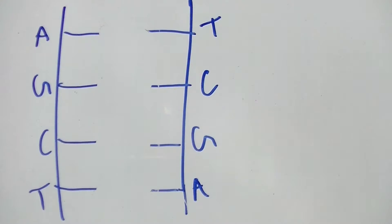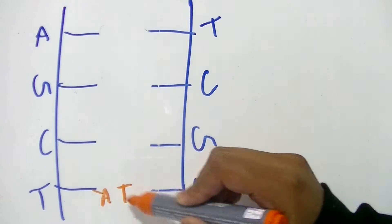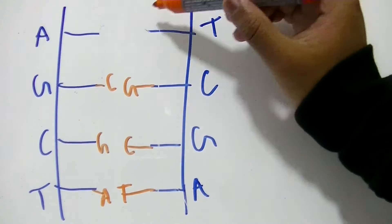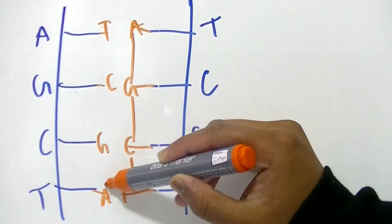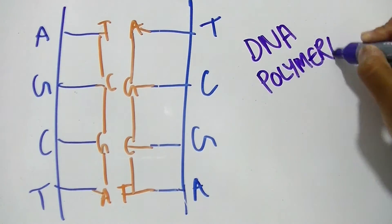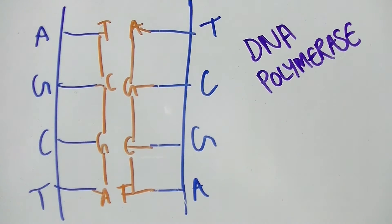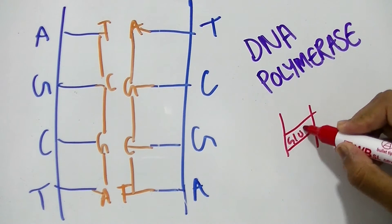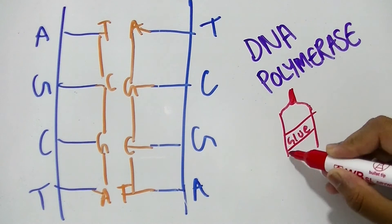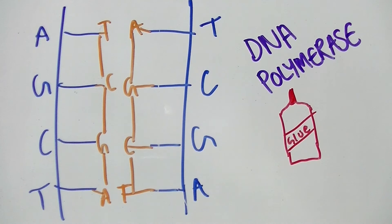The complementary base pairs attach onto the corresponding nucleotides — guanine will attach onto cytosine, and adenine will combine with thymine. Then DNA polymerase catalyzes the joining of the nucleotides on the new strands, and this happens during a condensation reaction.